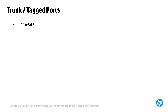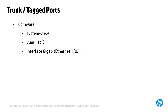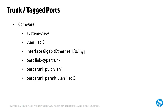To configure a trunk port on a switch running the Comware operating system, type 'system-view', create your VLANs — the command 'VLAN 1 2 3' creates VLANs 2 and 3 in addition to the default VLAN 1. Then specify the interface: 'interface gigabit ethernet 101', set the port link type to trunk with 'port link-type trunk'. The native PVID VLAN is VLAN 1 by default, changeable with 'port trunk pvid vlan'. Finally, specify permitted VLANs with 'port trunk permit vlan 1 2 3'.